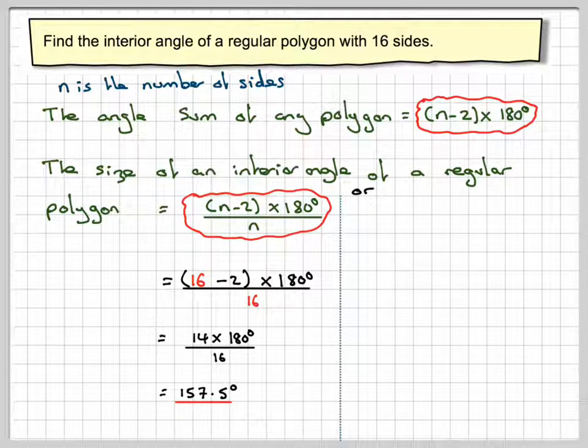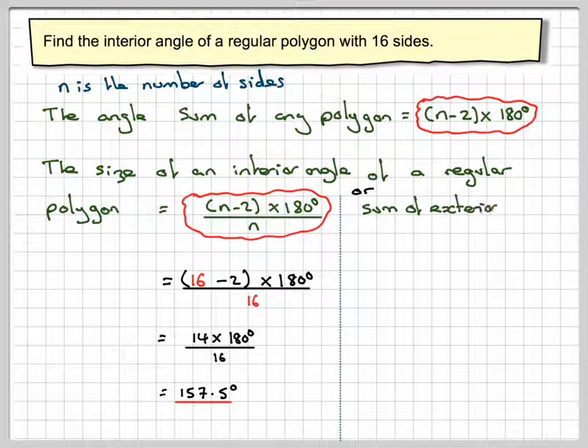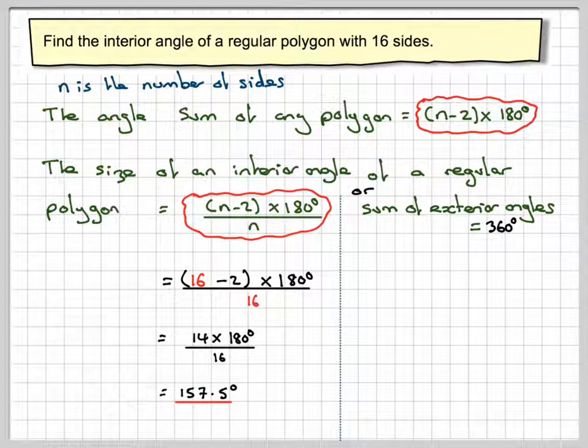That's one way. The other way is to say the sum of the exterior angles of any regular or any polygon is 360 degrees.